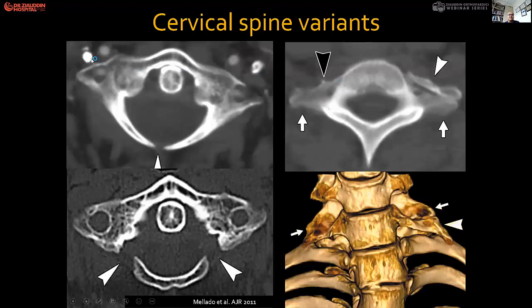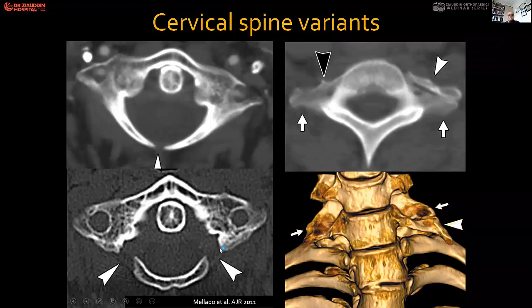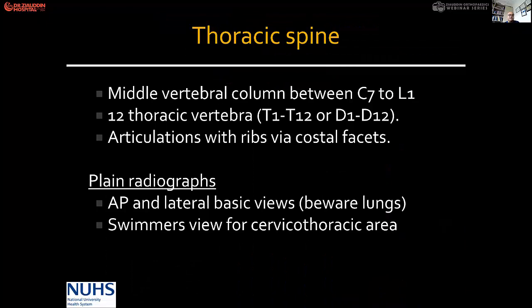The vertebral artery is here at the C1-C2 junction. These images highlight a defect in the posterior vertebral arch. C7 to T12 has 12 thoracic vertebrae — they articulate with the ribs through costal facets. We have AP, lateral, and swimmer's views of the cervicothoracic area.